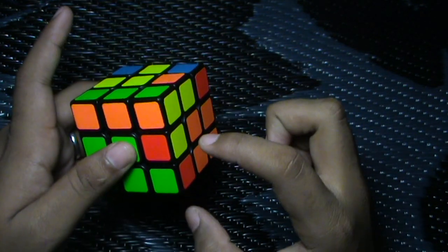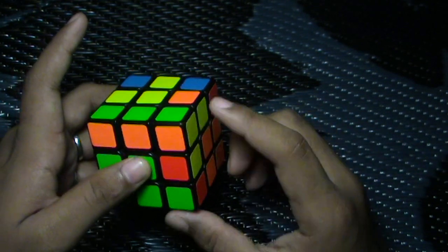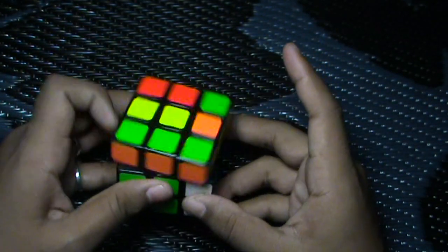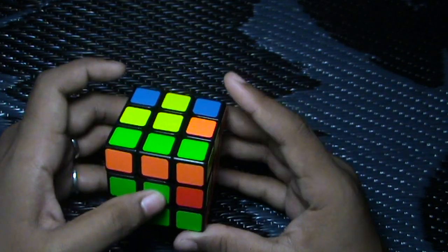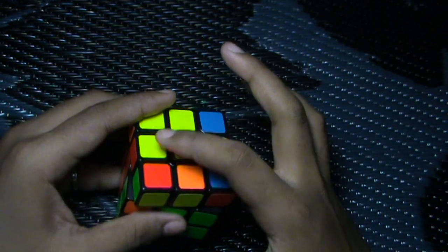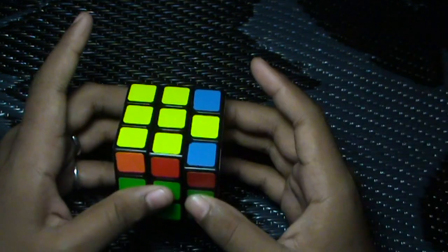What F prime U prime F does is that it swaps these two edges with this yellow on the top. If I just swap it like this I will not have the cross ready. So you do F prime U prime and F so this yellow comes on the top, and when I will insert it like this I will have the cross made.